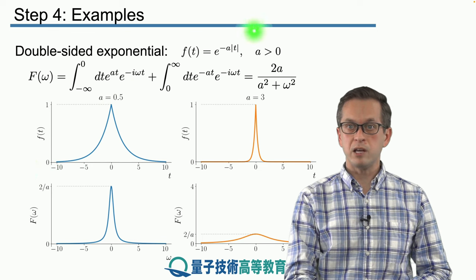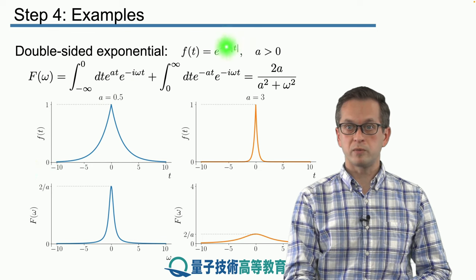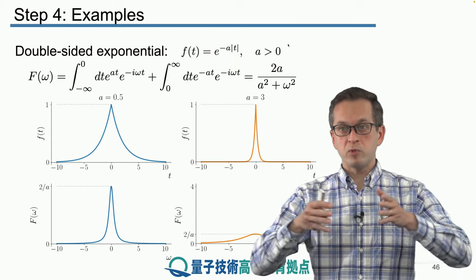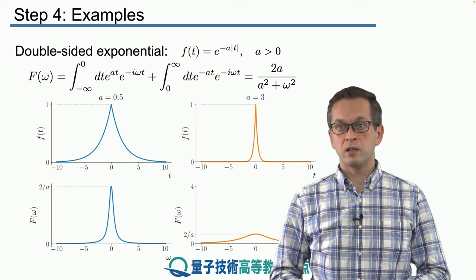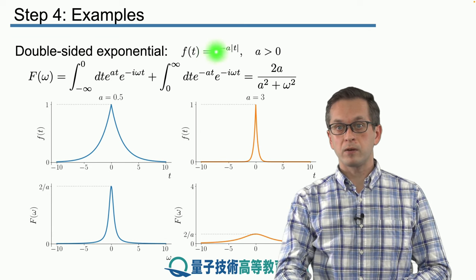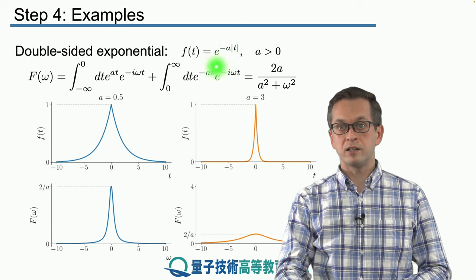It's got a peak at t equal to zero, as we would expect. And then as you move away from t equals to zero, it just exponentially falls down. How quickly it falls down is given by this coefficient a.